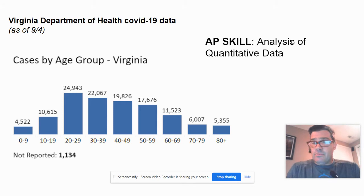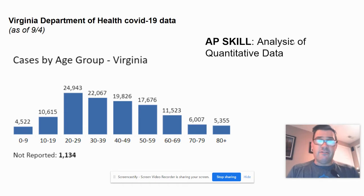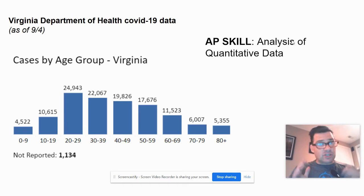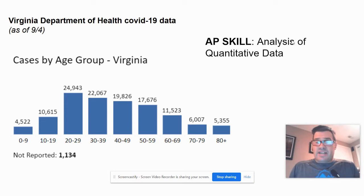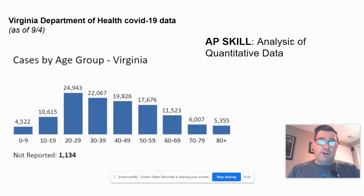So first off, we have some very relevant data right now: Virginia Department of Health COVID-19 data, as of 9-4. The first data here is cases by age group. Always look at your title first, then look at what the data is showing you. You've got age groups going across the bottom, and then the number of cases where people have tested positive for COVID.